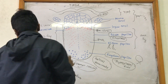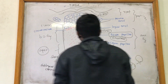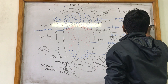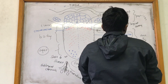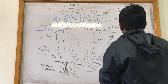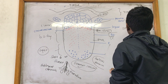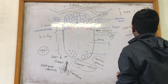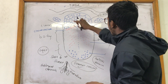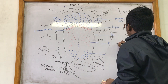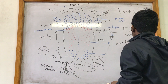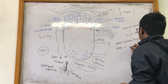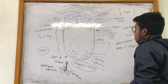The arterial supply of the tongue is mainly provided by the lingual artery, which arises from the external carotid artery. The root and dorsal surface of the tongue are supplied by the dorsal lingual artery, whereas the body is supplied by the deep lingual artery.